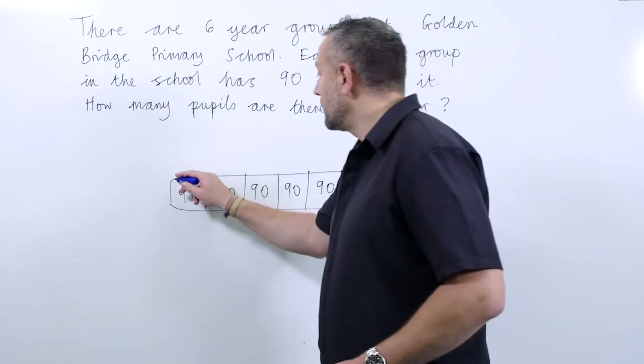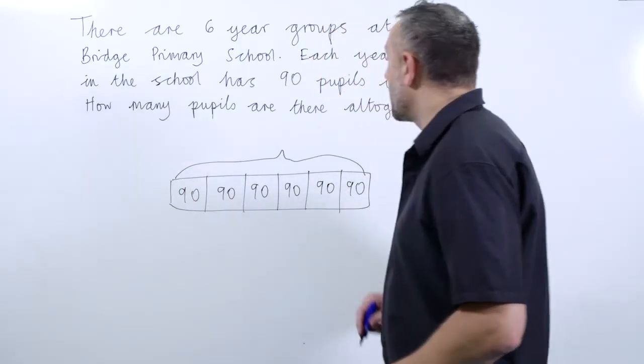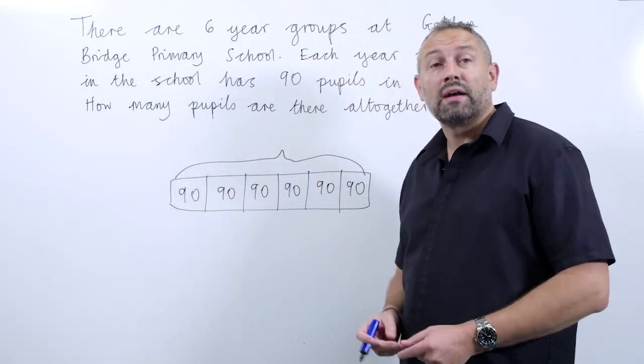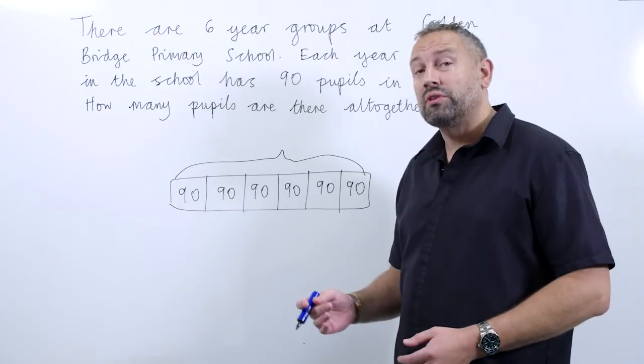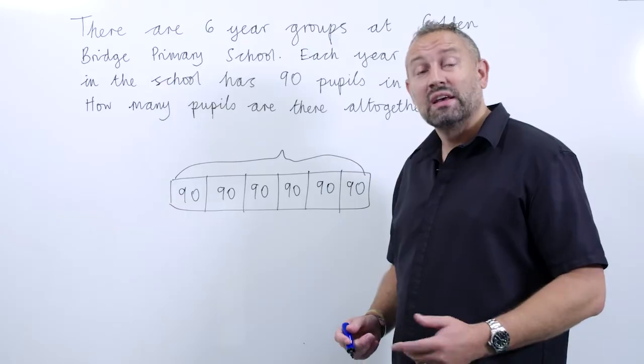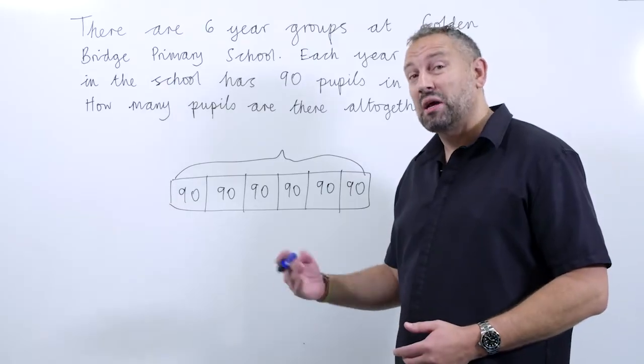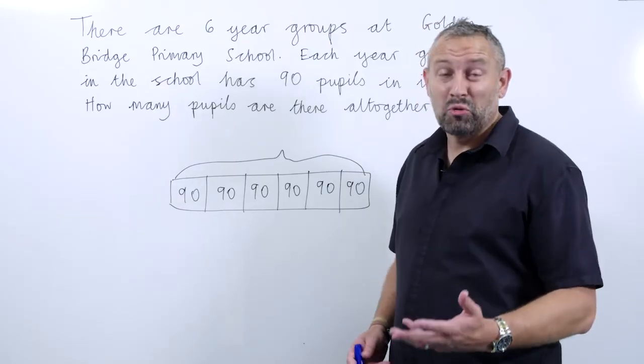So there we can see that we've got to combine all of these together and the children can do that through repeated addition or they may be able to see that they can multiply 90 six times or they may do six times nine to get 54 and then multiply it by 10.